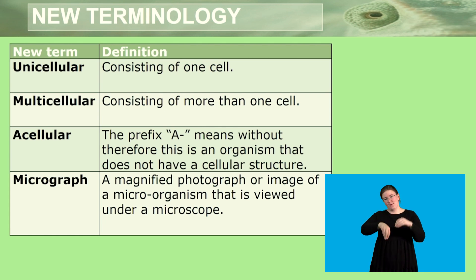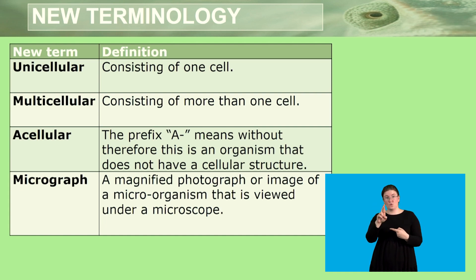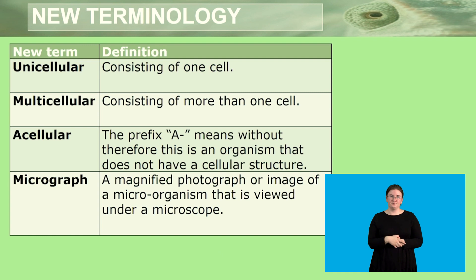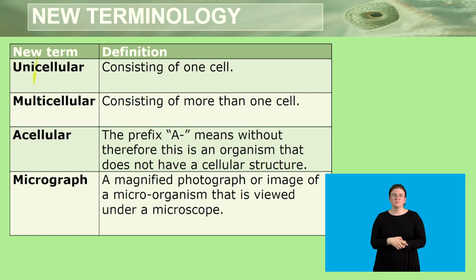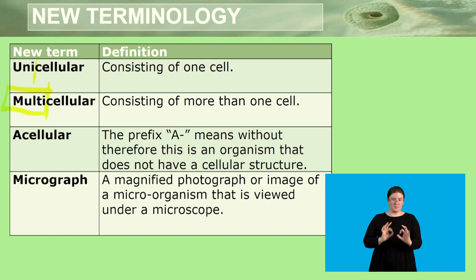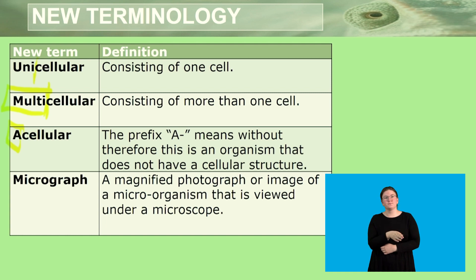In today's lesson, we are also going to come across some new words. We are going to come across the word unicellular. If you know your prefixes, you will see the prefix 'uni,' which means one. So when we define unicellular, we know that this consists of one cell. Then there is multicellular, meaning many, so this means that the organism consists of more than one cell. And then we have acellular, where the prefix 'a' means without, showing that the organism does not have a cellular structure.